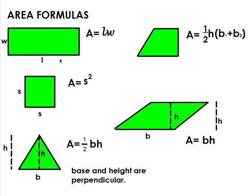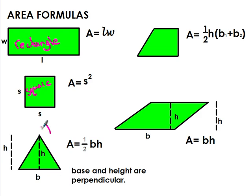So these are our formulas. Here we have a rectangle — area of a rectangle is length times width. This is our square — area of a square is side squared, but that's just because all sides of a square are the same. Remember, a square is technically a rectangle, so we can go length times width on this one. Here's our triangle — area equals half base times height. Remember, multiplying by half is the same thing as dividing by two.